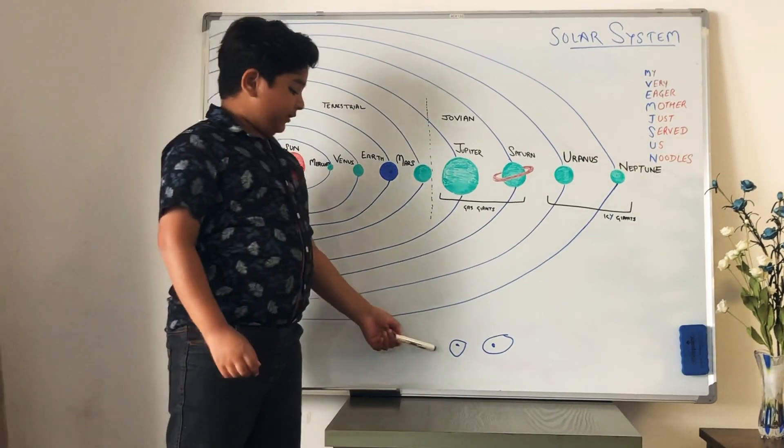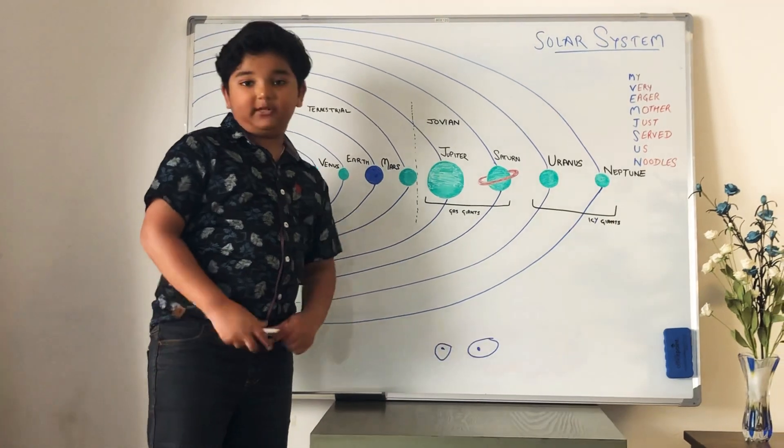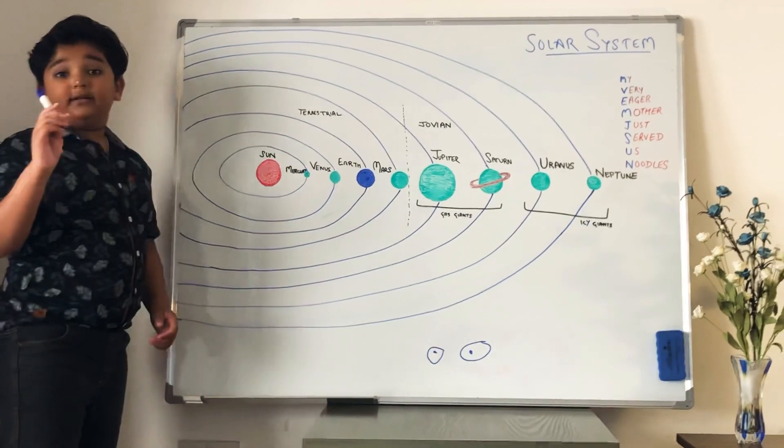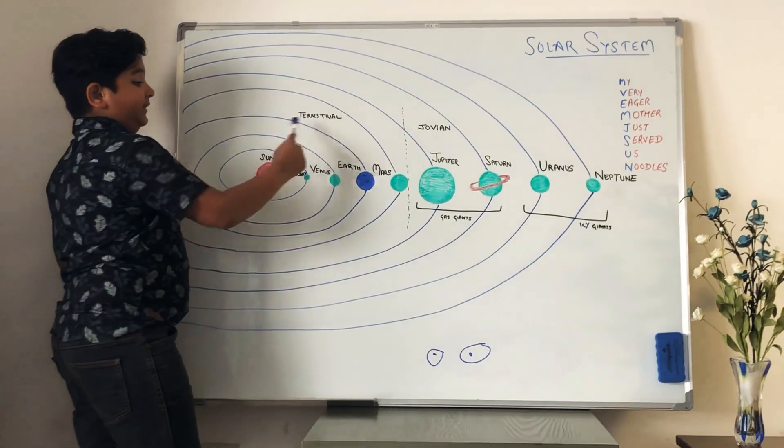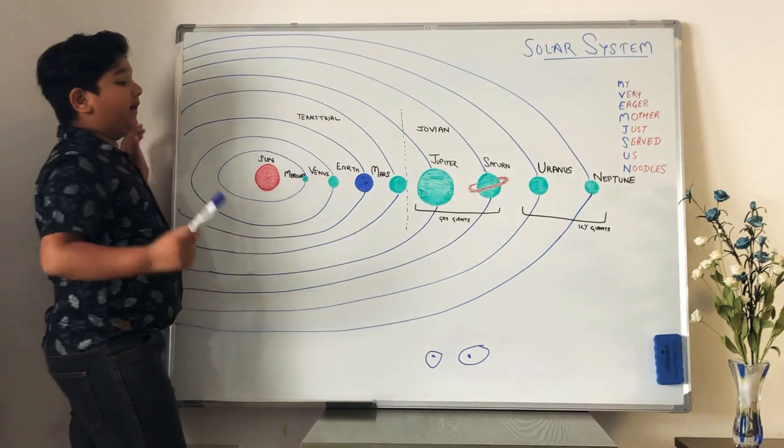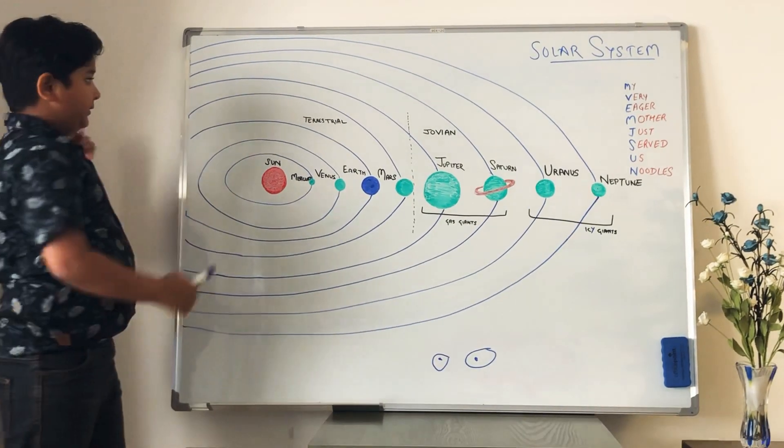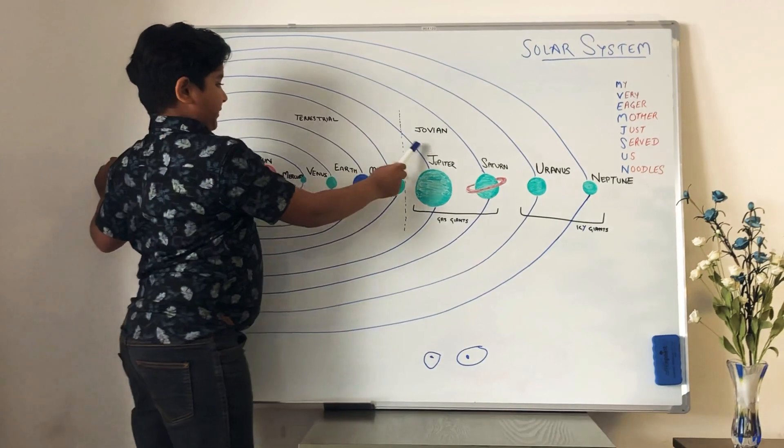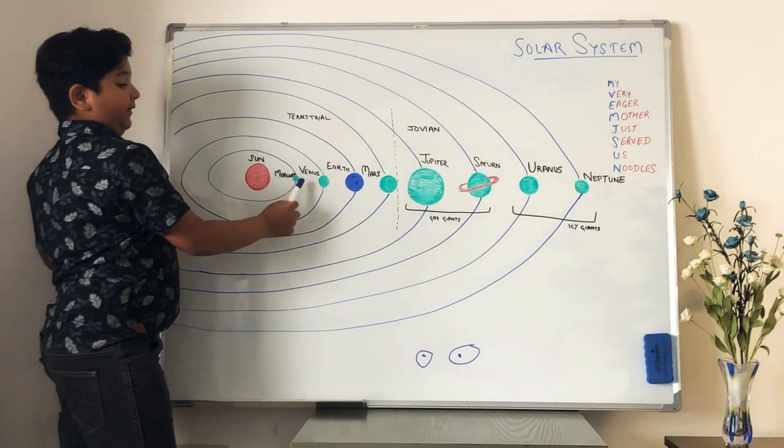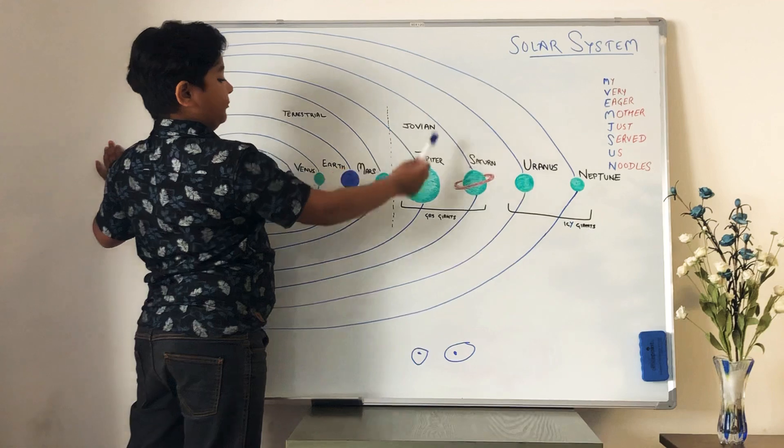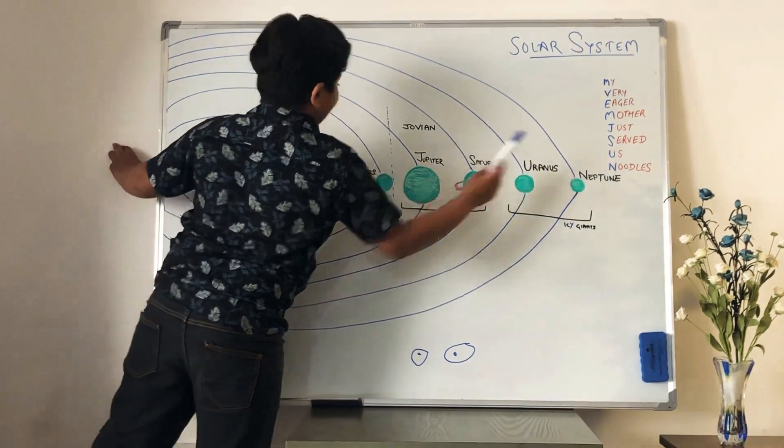So that is the difference between circular orbit and elliptical orbit. And do you know that these planets are divided into two parts? Terrestrial planet and Jovian planet. Terrestrial planets are Mercury, Venus, Earth, Mars. And Jovian planets are Jupiter, Saturn, Uranus and Neptune.